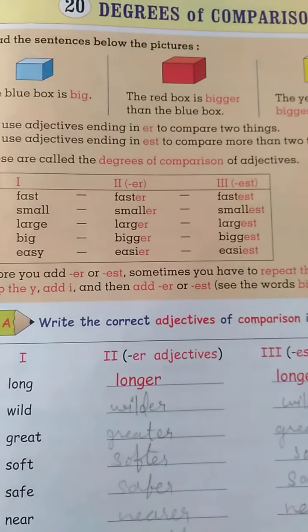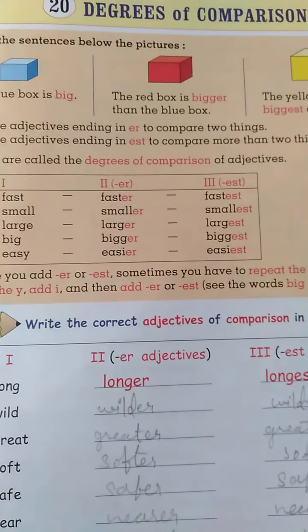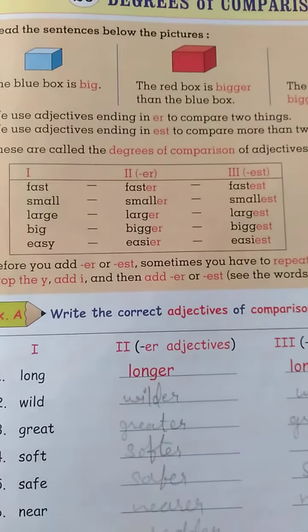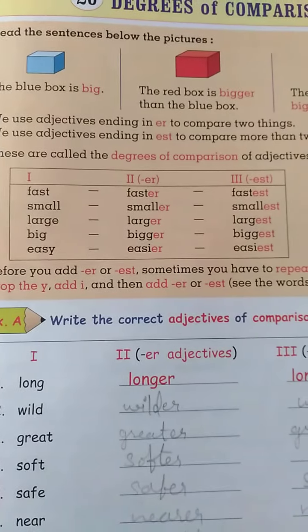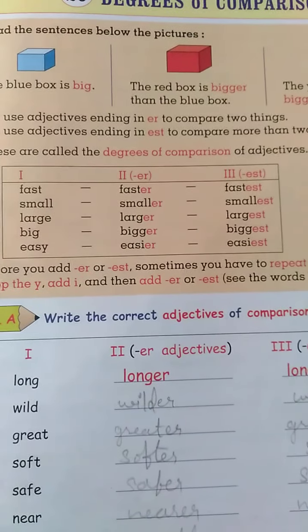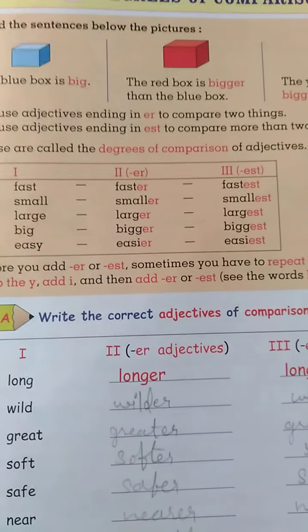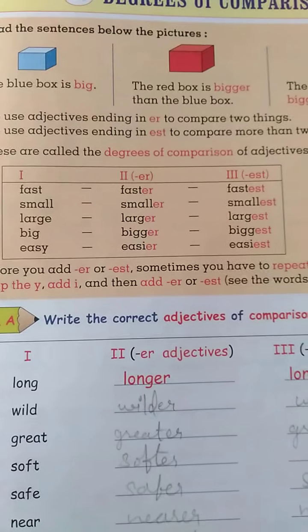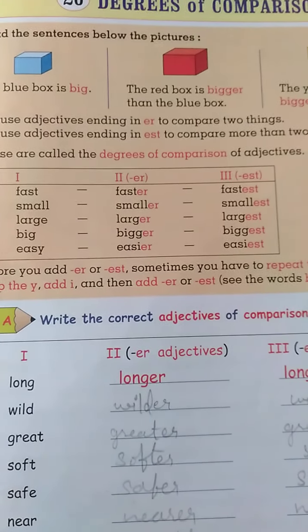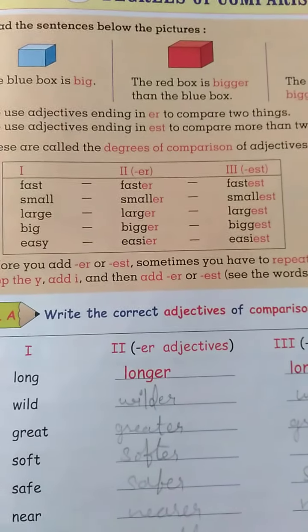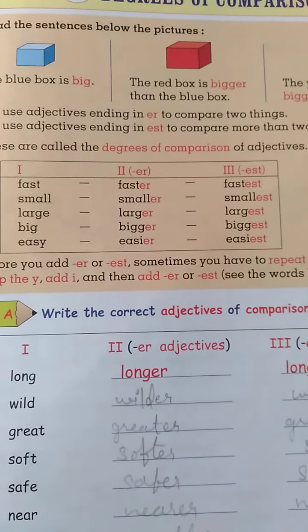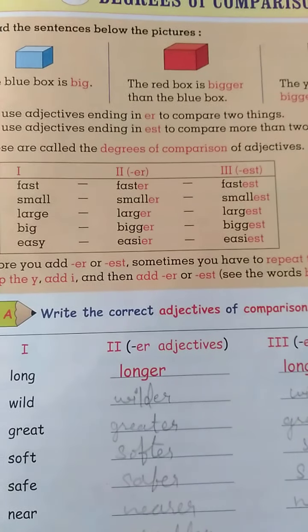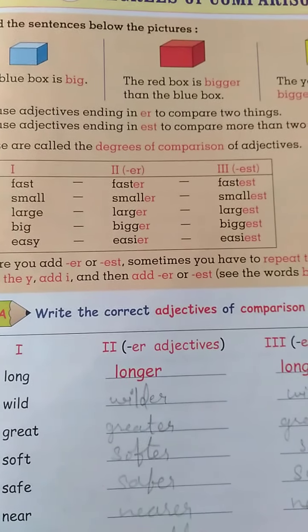These are called the degrees of comparison of adjectives. For example: fast, faster, fastest. Small, smaller, smallest. Large, larger, largest. Big, bigger, biggest.